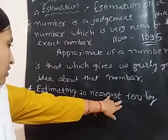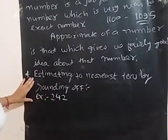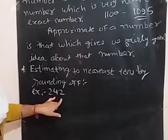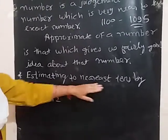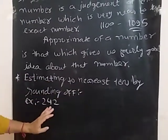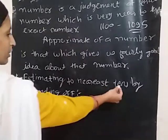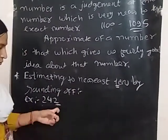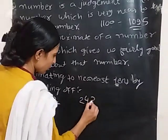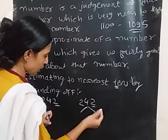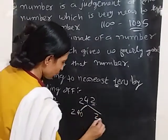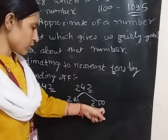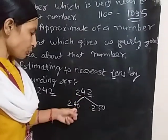Estimating to the nearest tens by rounding off. How do we do that? We take the number 242. We need to round off to the nearest tens, so we look at the unit place. The number 242 lies between 240 and 250. Since 242 is nearest to 240, we round it to 240.